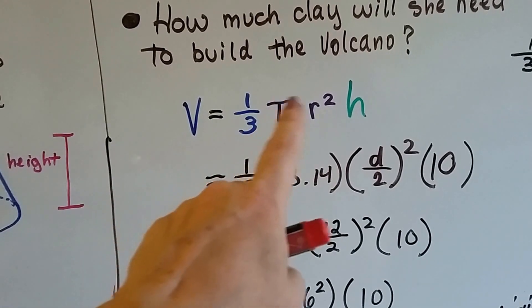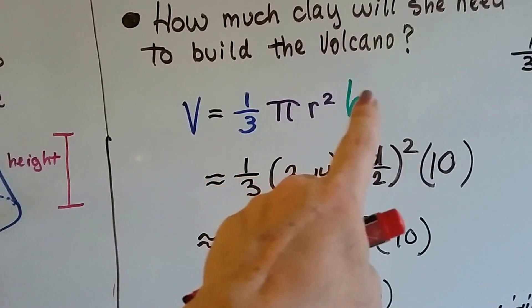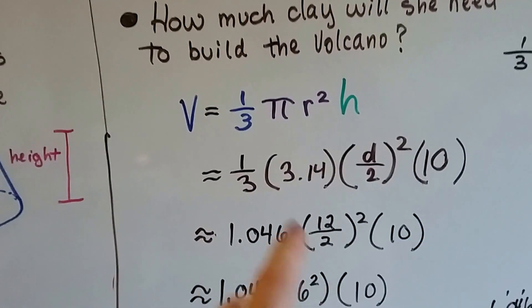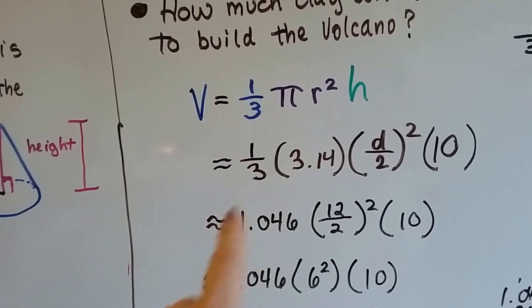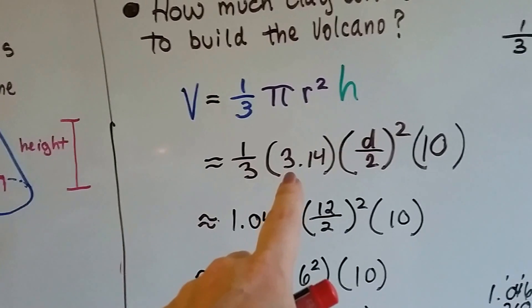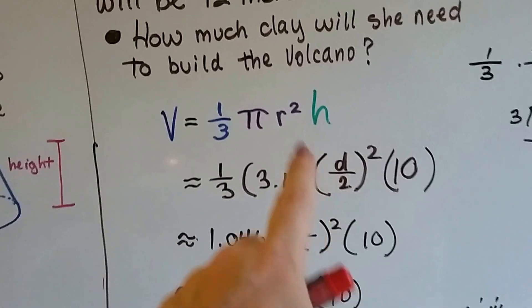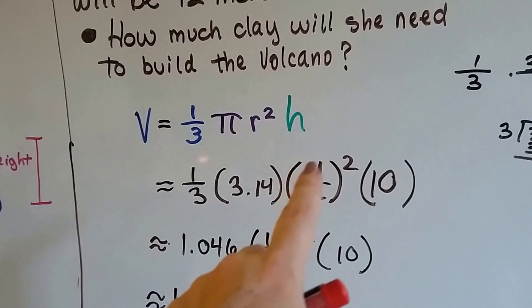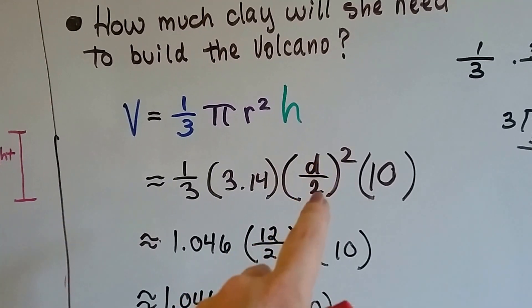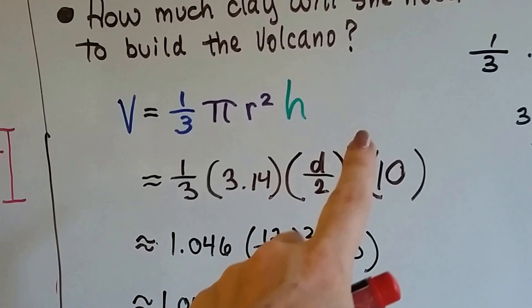So we've got one-third, and then the pi r squared is the base, times the h height. So we've got one-third times 3.14, which means because of pi, we have to start using an approximate symbol. And because we don't have the radius, we only have the diameter, we can write it as d over 2, d divided by 2, inside parentheses, with the little square sign on the outside.